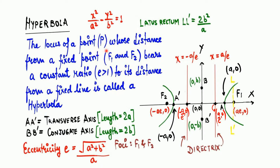The locus of a point P whose distance from fixed points F1 and F2 bears a constant ratio E greater than 1 to its distance from a fixed line is called a hyperbola. Imagine you have a point P somewhere here. If you measure the distance from this vertical line and also the distance from this particular focus, this length and this length will bear a ratio called the eccentricity.